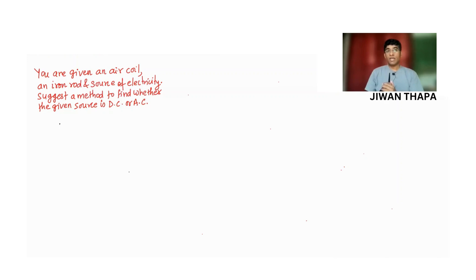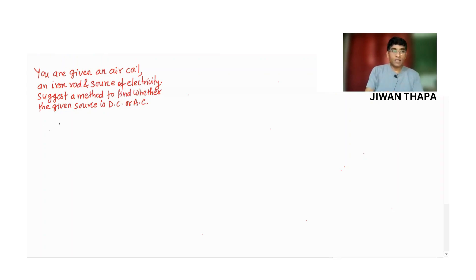You are given an air coil, an iron rod, and a source of electricity. Suggest a method to find whether the given source is DC or AC.